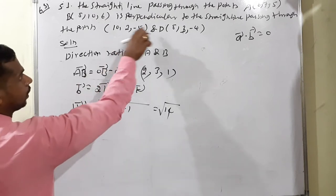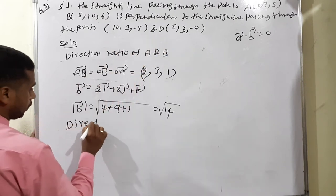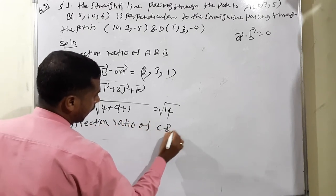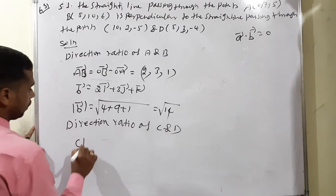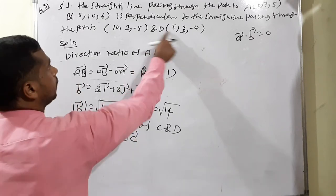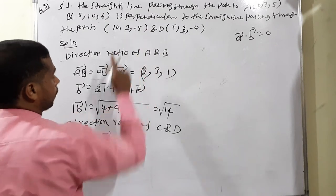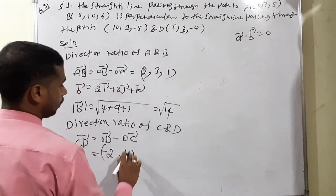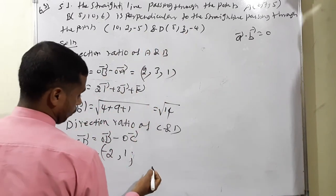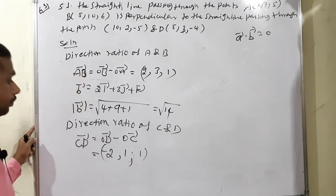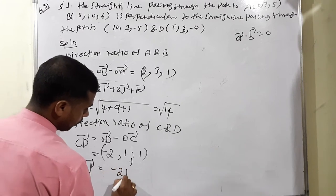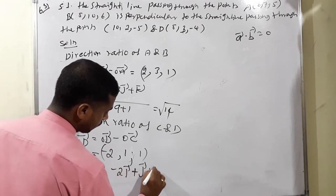Second condition — direction ratio of CD: CD vector equals OD minus OC. So 8 minus 10 equals negative 2, 3 minus 2 equals 1, then negative 4 plus 5 equals positive 1. Therefore d vector equals negative 2i plus j plus k.